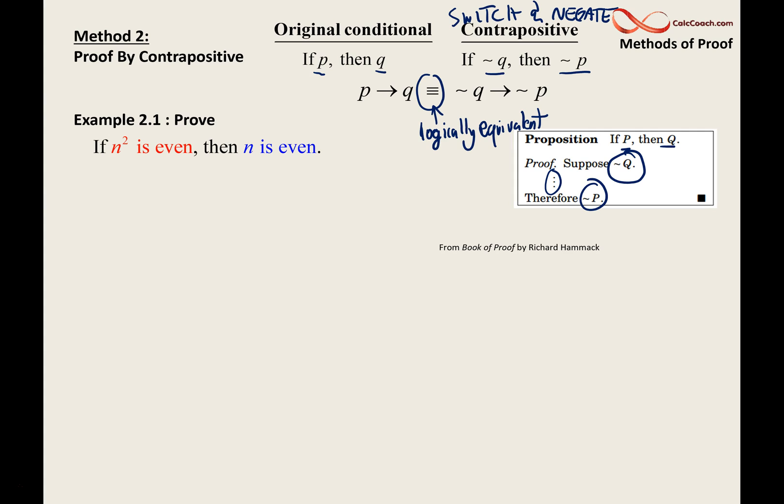If n squared is even, then n is even. Simple statement, right? But direct proof isn't something that can be readily done. The fact that 16 is even means that 4 is even, the thing that you square. That makes sense for sure. We can think of all kinds of examples, but we need to prove it.